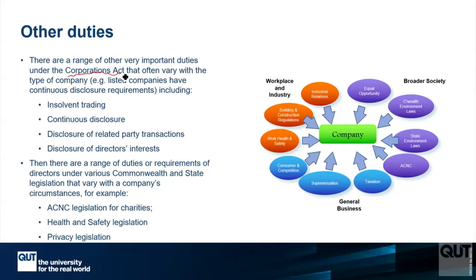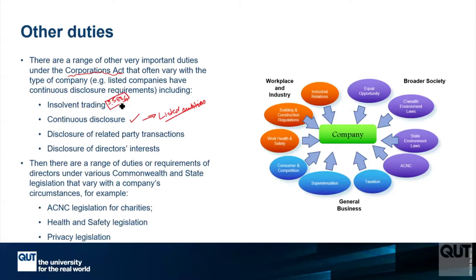Under the Corporations Act, there's a series of other requirements that we haven't been through. Things like continuous disclosure, which applies to listed entities only — that's an example of a very important requirement but it only applies to listed entities. Insolvent trading under section 588G is a very important piece of legislation in Australia that applies to directors, not officers, but it's a generalised requirement that's really important to know. We haven't been through that because it's a specific piece of legislation.